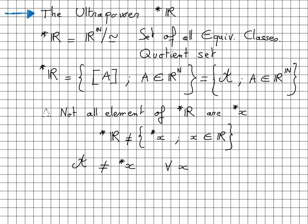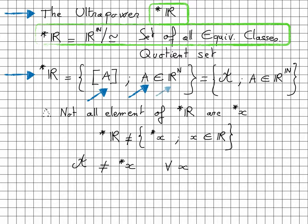Let us now build star-R — it is a quotient set. We can write star-R as the set of all equivalence classes of sequences in R^N, using curly-A notation. Be careful: not all elements of star-R are of the form star-x. In fact, star-R is not limited to the equivalence classes generated by constant sequences. So in general, curly-A is not one of the elements we write as star-x.